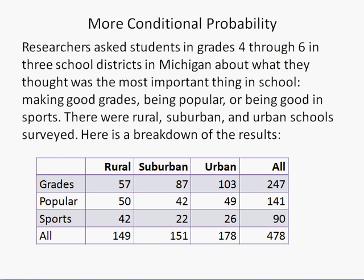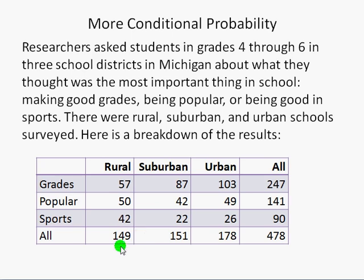Let's look at some more conditional probability. We have another survey of students in grades 4 through 6 in some Michigan school districts who were asked what's the most important thing in school: making good grades, being popular, or being good in sports. We have rows for grades, popularity, and sports, and columns for rural, suburban, and urban districts, plus totals. There were 478 survey respondents: 149 rural, 151 suburban, 178 urban. Of all those, 247 said grades were most important, 141 said popularity, and 90 said sports.